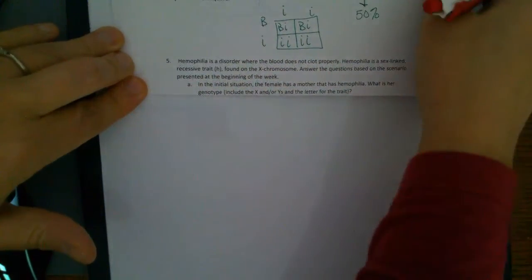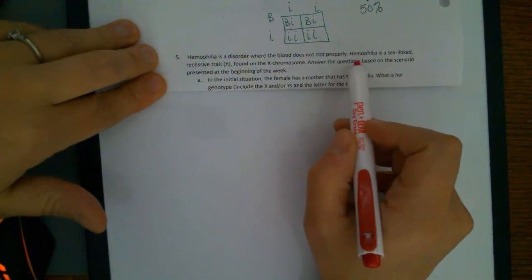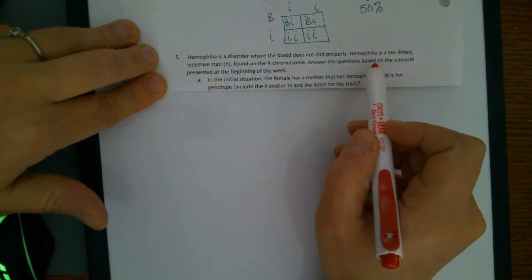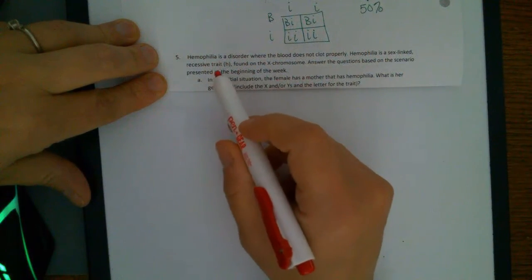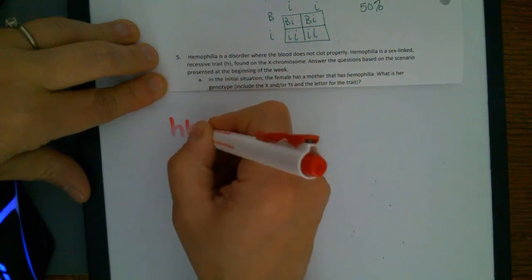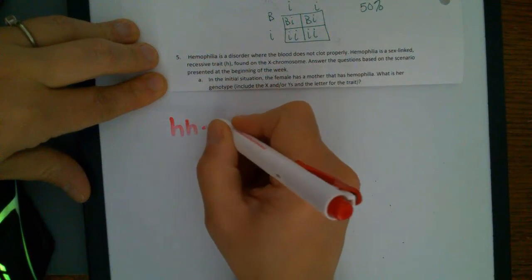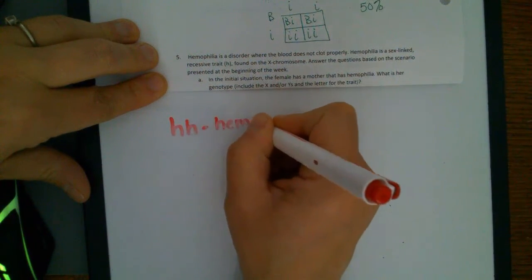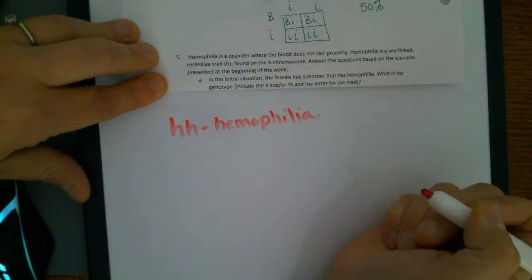Okay, so hemophilia is a disorder where the blood does not clot properly. Hemophilia is a sex-linked recessive trait. So let's start with the recessive trait. We're using little h's. So we know from the previous examples that if you have a recessive trait for a disease, you would have to be two little letters. So little h, little h would be hemophilia.